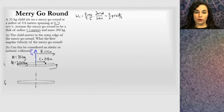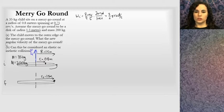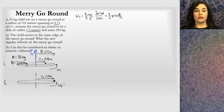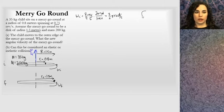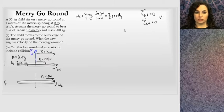The problem says the child moves to the outer edge of the merry-go-round. In the final position, the child is out at R2 = 1.5 meters. What is the new angular velocity of the merry-go-round? I note that the child moving out involves only internal forces — no external forces were applied on the system. So I'll note: F_external = 0, and therefore the external torque = 0. Both of those are the conditions needed for conservation of angular momentum.